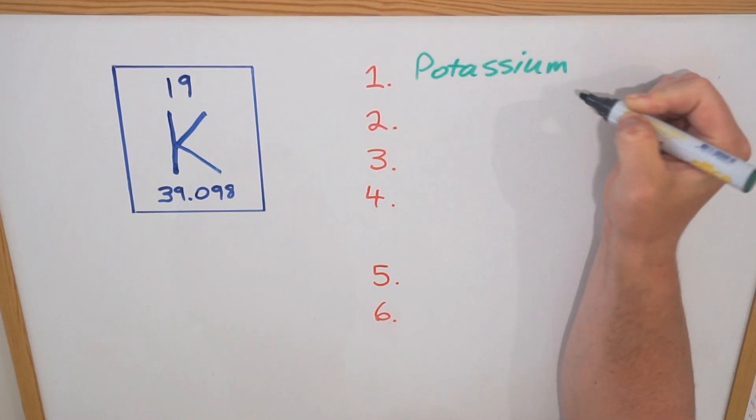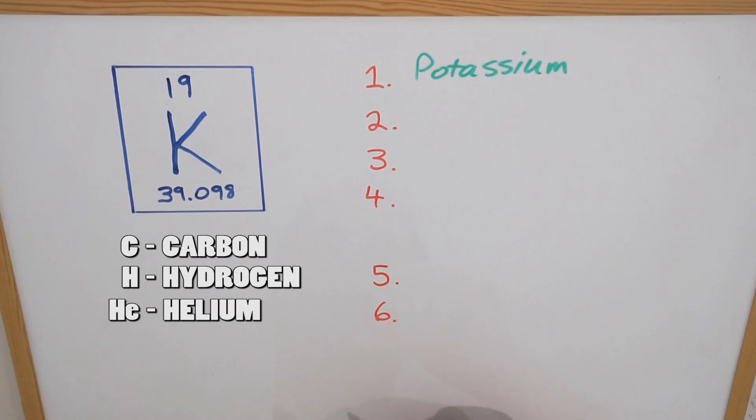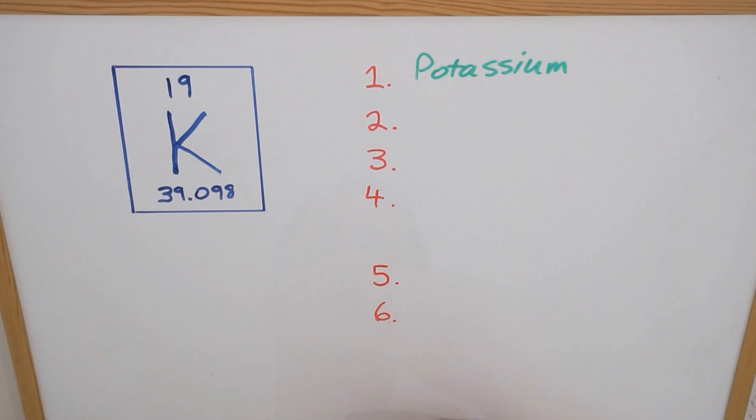But you might be thinking, well why is potassium represented by the symbol K when you've got a whole bunch of other elements whose symbols come from the first letter or first couple of letters of their name like C is carbon, H is hydrogen, He is helium? The reason is there's a group of elements whose symbol comes from the Latin name of the element.